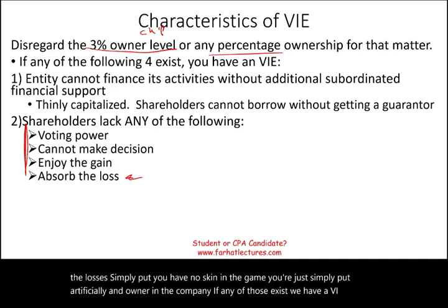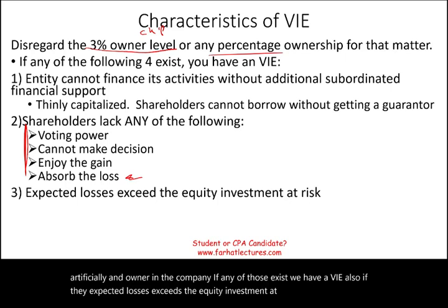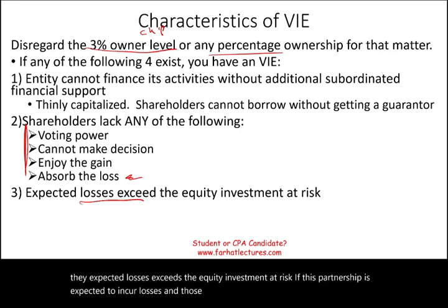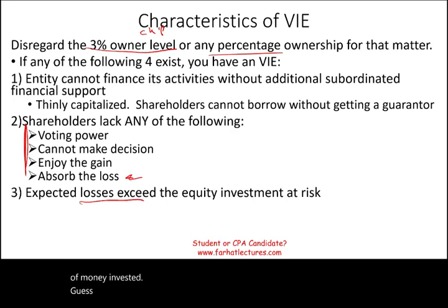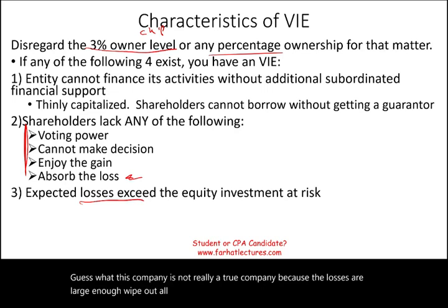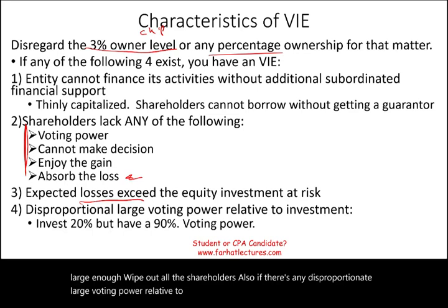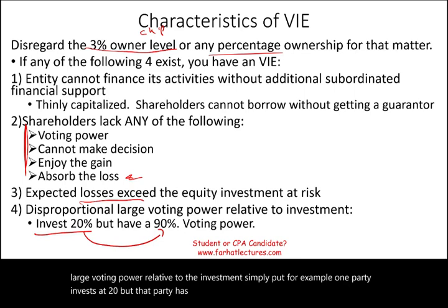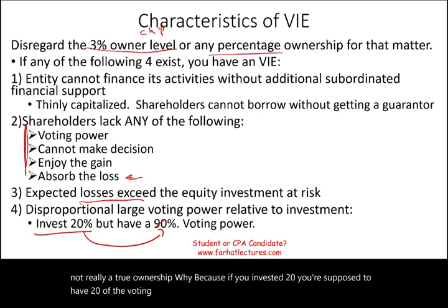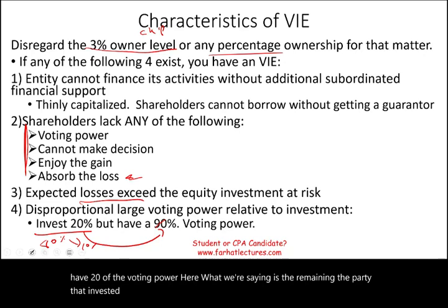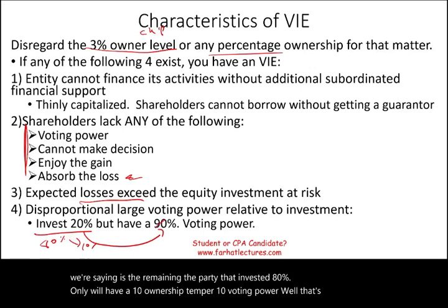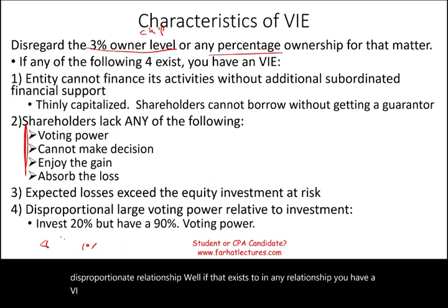Three: if the expected losses exceed the equity investment at risk — if losses are large enough to wipe out all the shareholders, this is not really a true company. Four: if there is any disproportionate large voting power relative to the investment. For example, one party invested 20% but has 90% of the voting power, while the party that invested 80% only has 10% voting power — that's a disproportionate relationship. Any of those four criteria gives you a VIE; they don't all have to be present.